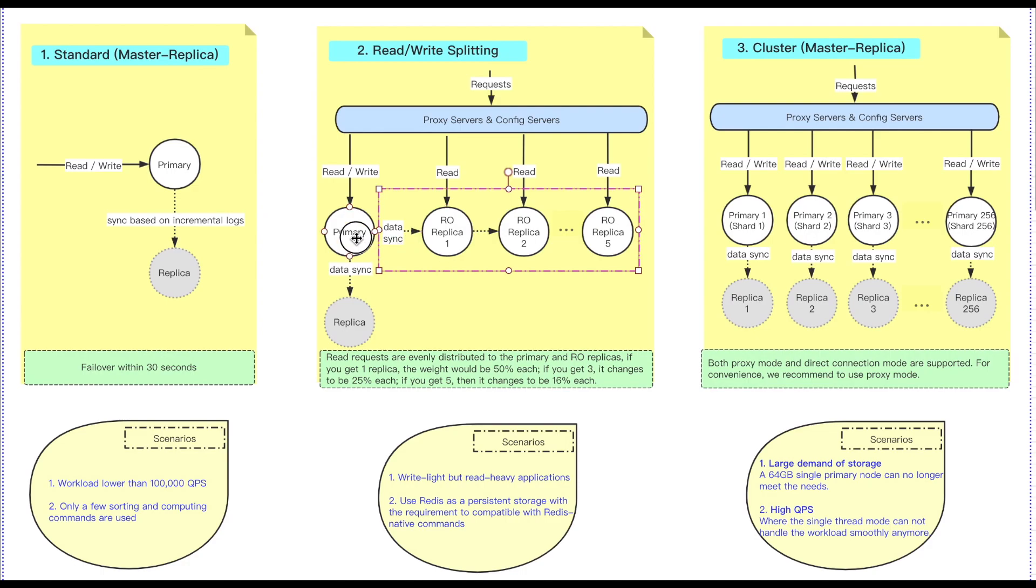Meanwhile, you'll see that the primary node responds to all the write and partial read. That accounts to the splitting of read and write. You'll also see that the read requests are evenly distributed to the primary node and RO instances. If you get one replica, the read will be 50% each. If you get three, it changes to be 25% each. If you get five, then it changes to be 16% each.